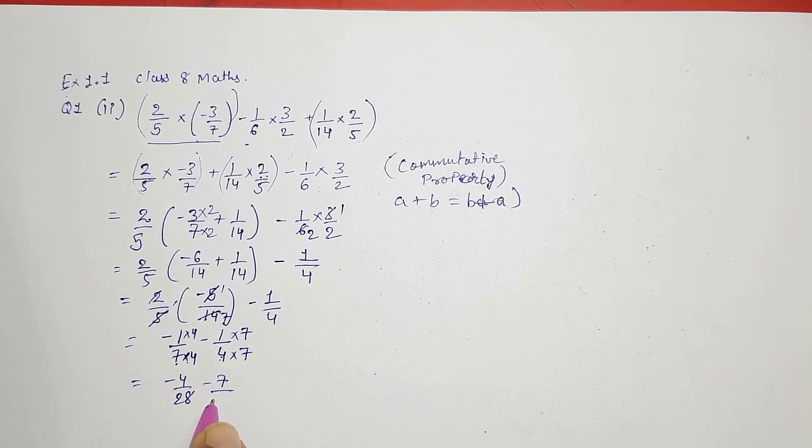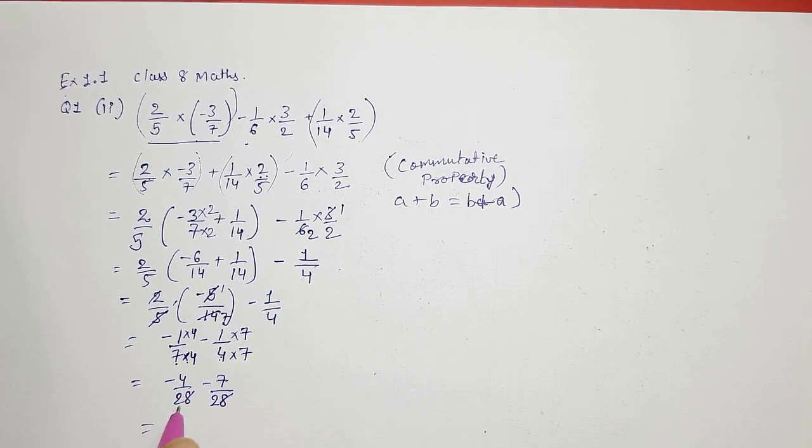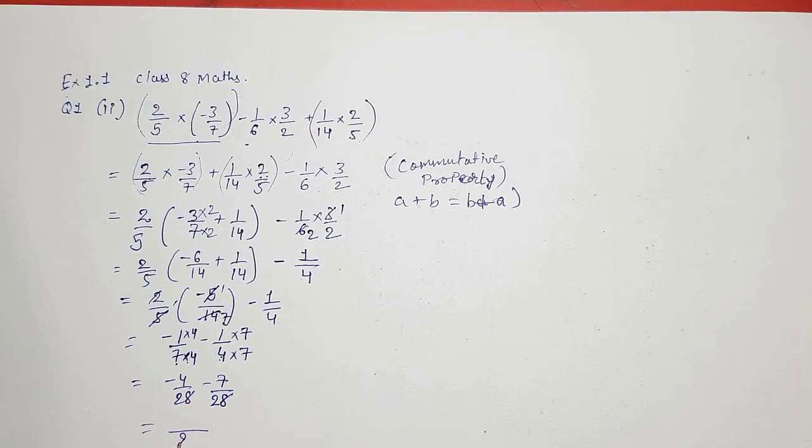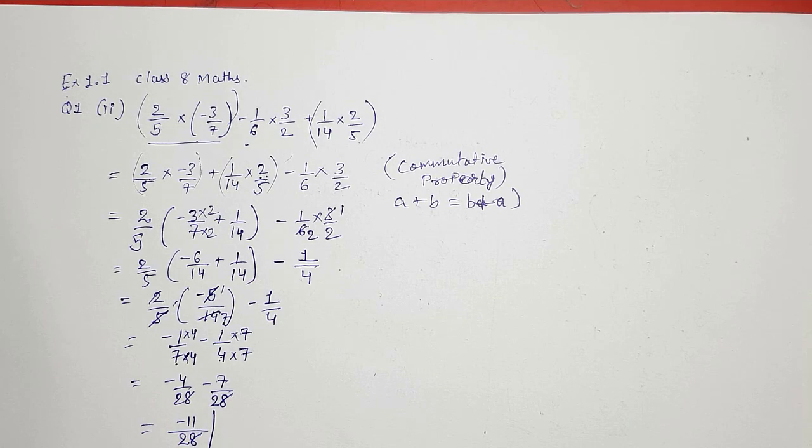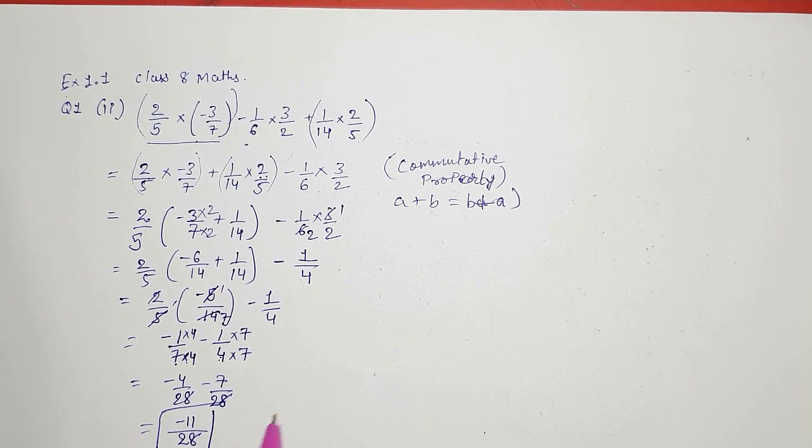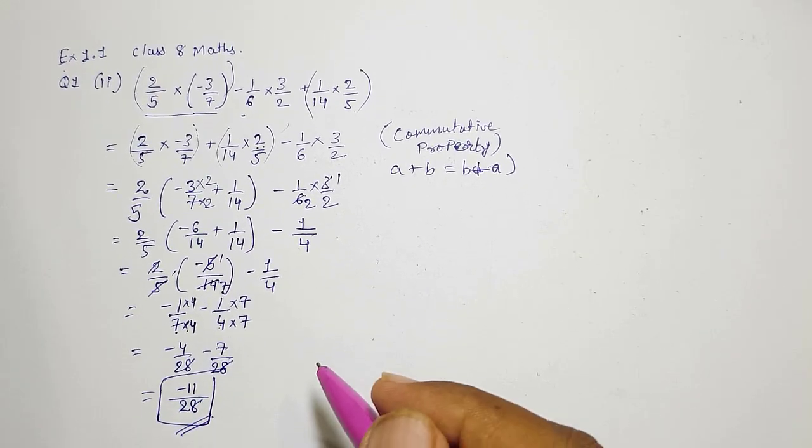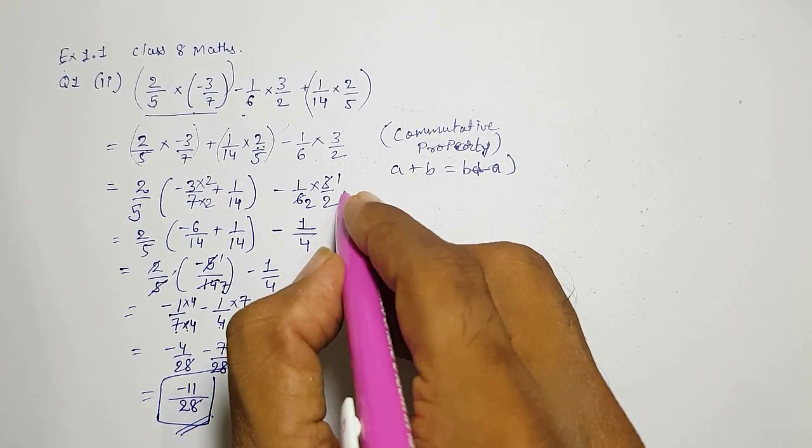So now you can see denominator is same so now we can add or subtract. So minus 4 minus 7, minus 11, so our answer is minus 11 by 28.